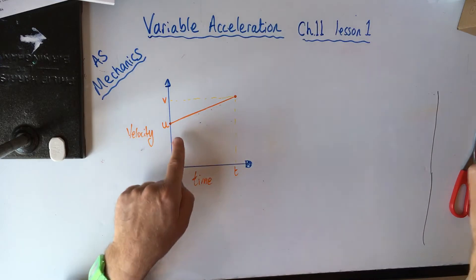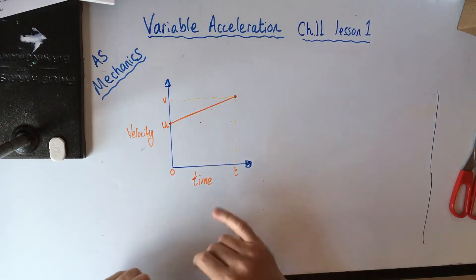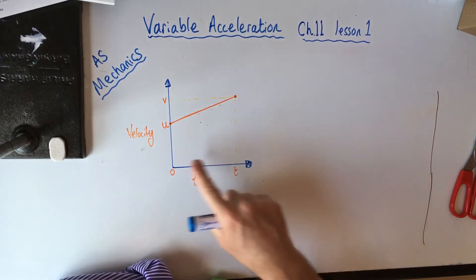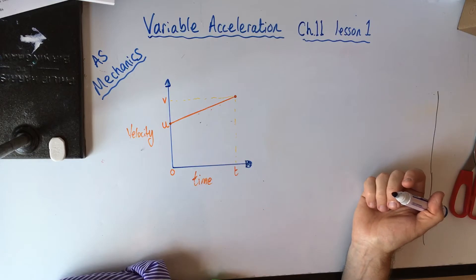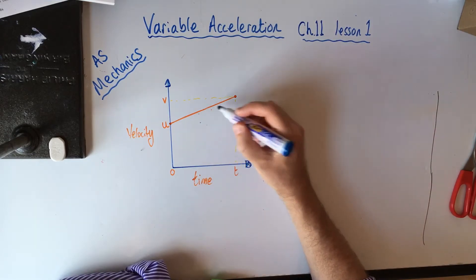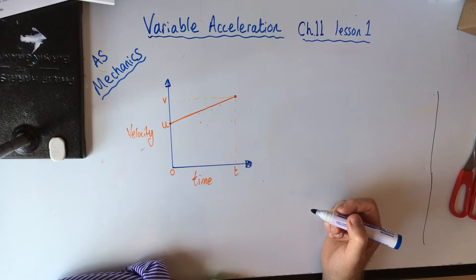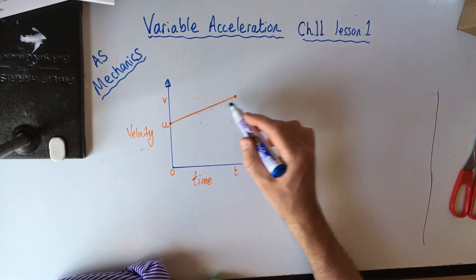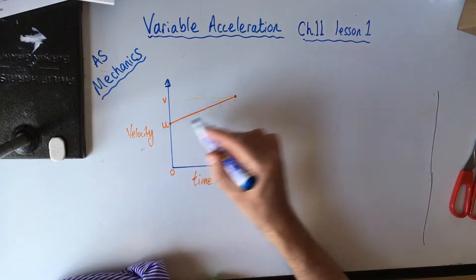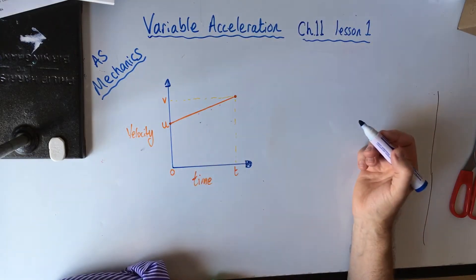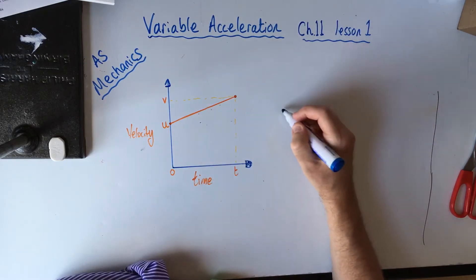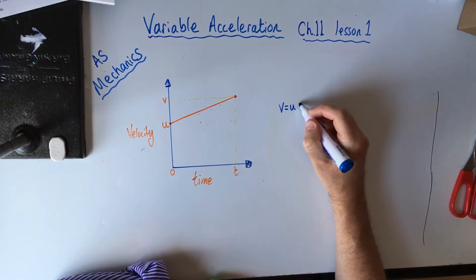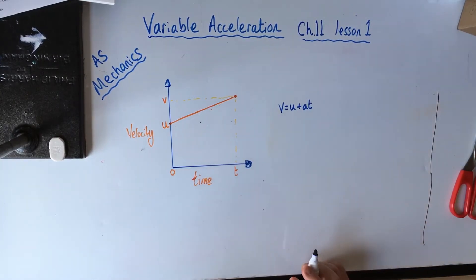Let's go back and look at our SUVAT equations. This is a velocity-time graph — a straight line, so it's constant acceleration. Applying y equals mx plus c: our c value is our u, the initial velocity, and the gradient is the acceleration. So we get v equals u plus at, as explained in the SUVAT lessons.